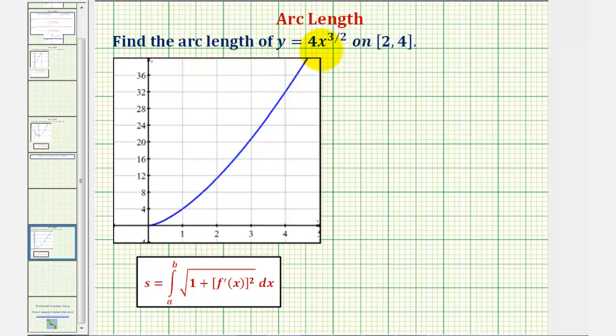We want to find the arc length of y equals 4x to the power of 3 halves on the closed interval from 2 to 4.